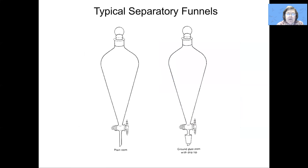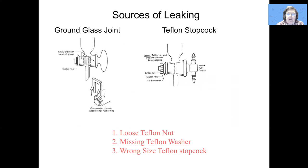There are many different kinds of separatory funnels. Here I show one with a plain stem and one with a ground glass stem. When we put our separatory funnel together, it can leak either from the top, from the lid or the stopper. In that case, what we would do is take out the stopper, inspect it, clean it, and then reinsert it with a slight twist to get a good seal. If it still leaks from the stopper, then you probably have an incorrect stopper and you need to go find the right one that matches that particular separatory funnel.